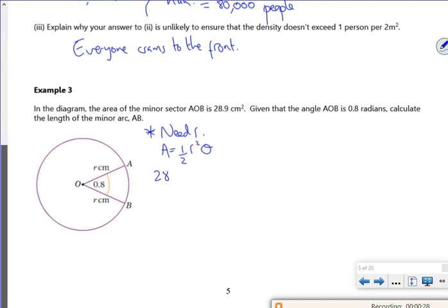So 28.9 is a half of R squared times 0.8. So 28.9 equals 0.4 R squared. So that would give me, if I divide through by 0.4,